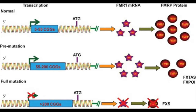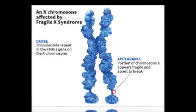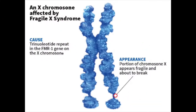In most people, the CGG site is non-methylated. As a result, the cell can use the FMR1 gene when there is a need for FMRP. In people who do have Fragile X syndrome, the cell is unable to copy the information in the FMR1 gene. Since an mRNA copy is not made, FMRP will not be synthesized.